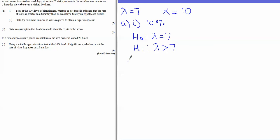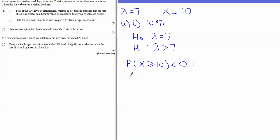To test whether 10 is significant, we want to check whether the probability that X is 10 or more is less than 0.1 — in other words, whether 10 or more falls within the top 10%. The probability of X being greater than or equal to 10 equals 1 minus the probability of X being less than or equal to 9.